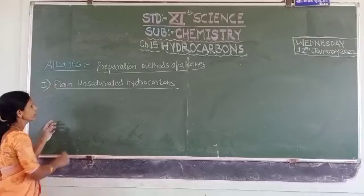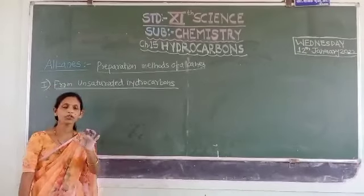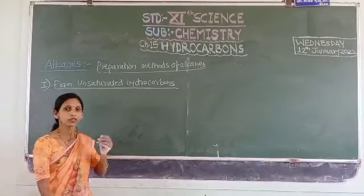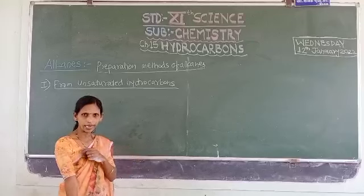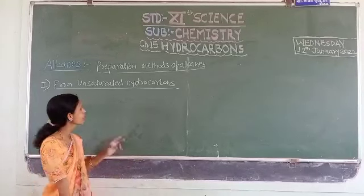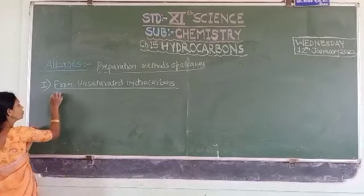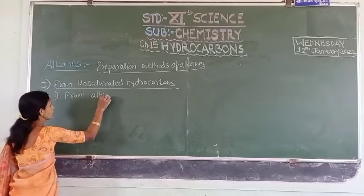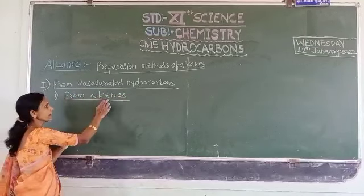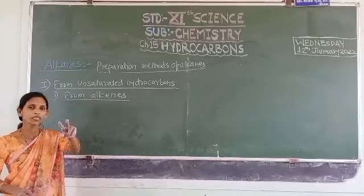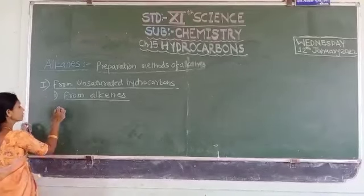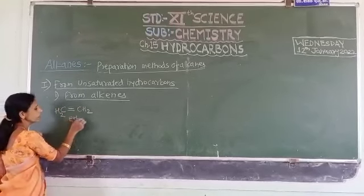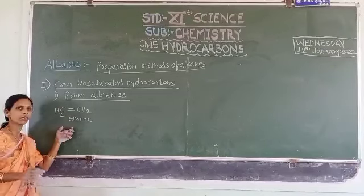Alkanes are saturated hydrocarbons because they contain carbon-carbon single bonds. But unsaturated hydrocarbons — those are alkenes and alkynes — all of you studied about that in the previous chapter. First of all, we have to prepare alkanes from alkenes. The first alkene is CH2=CH2, that is ethene, which contains a carbon-carbon double bond.